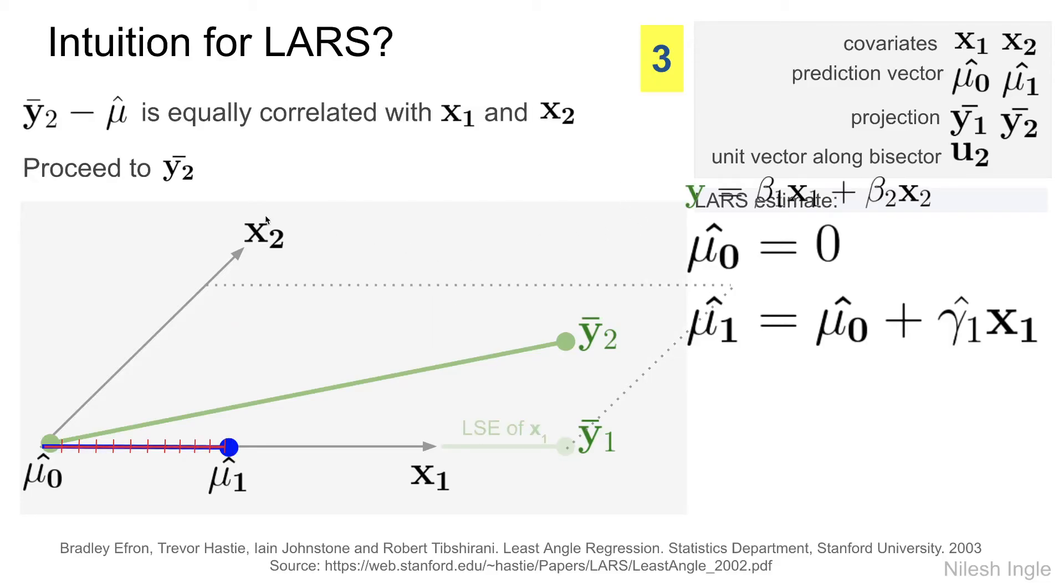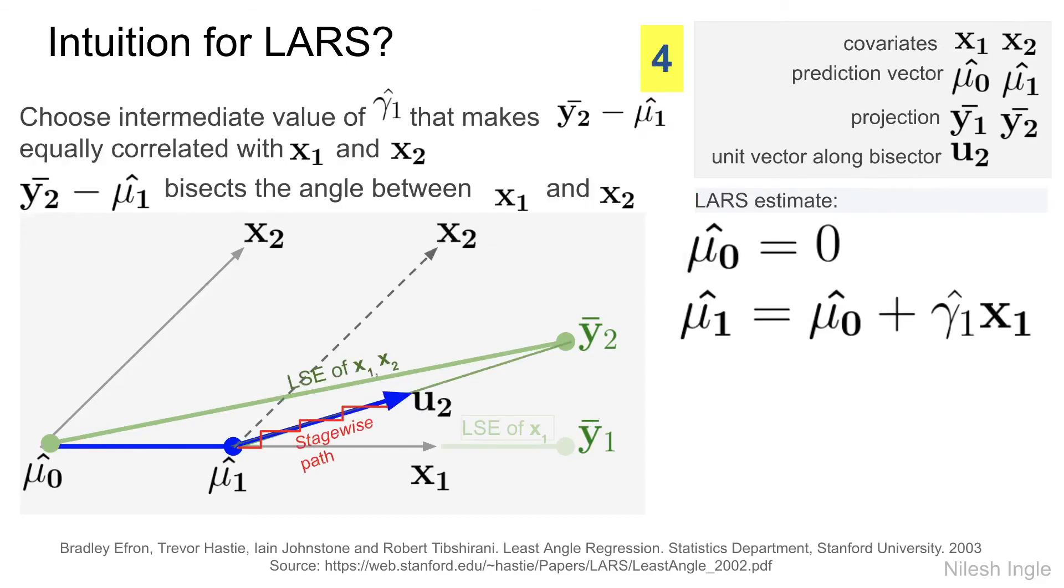At some point, such as here shown in the blue dot, we reach where the correlation between the residual and the feature x1 and the residual and feature x2 is the same. That's when we start moving in a direction that is shown here in u2, which is bisecting this angle between x2, mu hat 1, and x1. So we are moving towards y bar 2 along this particular path.